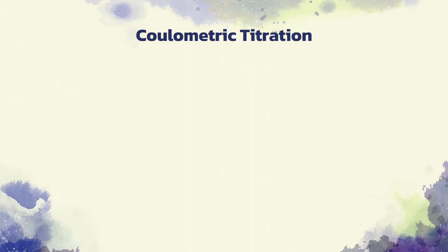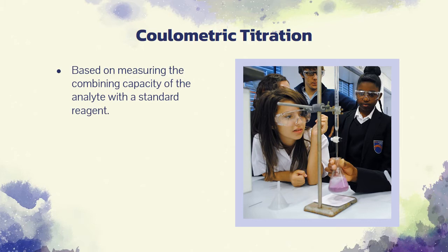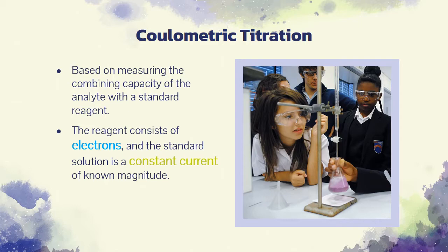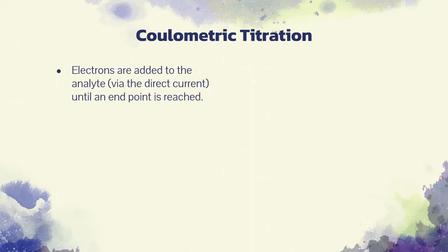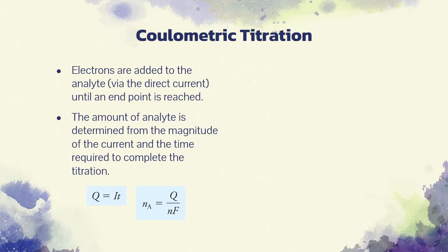Coulometric titrations are similar to other titrimetric methods in that the analyses are based on measuring the combining capacity of the analyte with a standard reagent. In the coulometric procedure, the reagent consists of electrons, and the standard solution is a constant current of known magnitude. Electrons are added to the analyte via the direct current or to some species that immediately reacts with the analyte until an endpoint is reached. At that point, the electrolysis is discontinued. The amount of analyte is determined from the magnitude of the current and the time required to complete the titration.